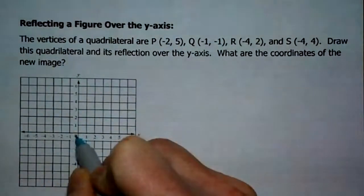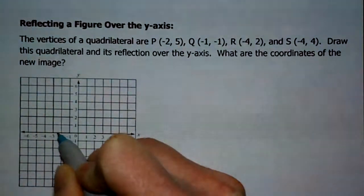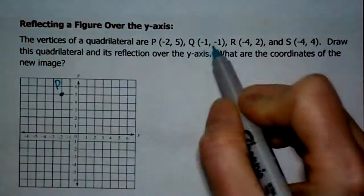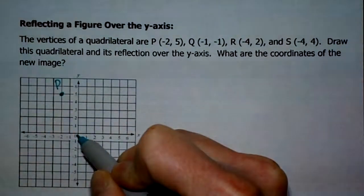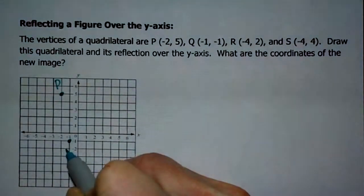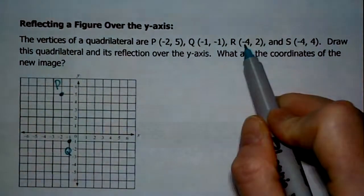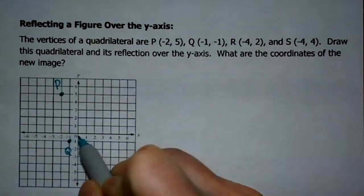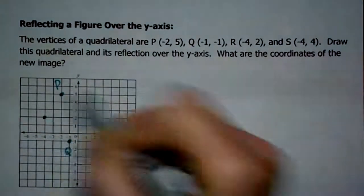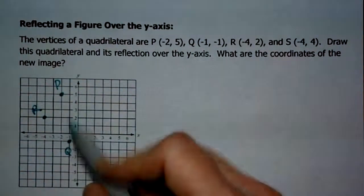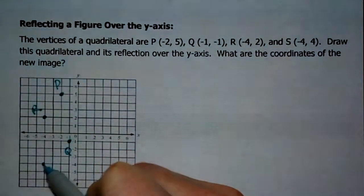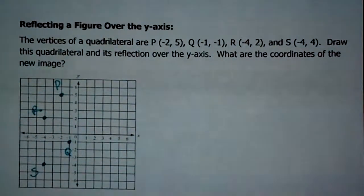So let's start by drawing this quadrilateral. Let's plot those points. So point P is negative two, five. So I'm going to go two to the left and five up. Q is negative one, negative one. R is negative four, two. So one, two, three, four, one, two. And S is negative four, four. One, two, three, four, one, two, three, four.